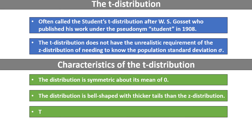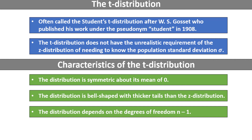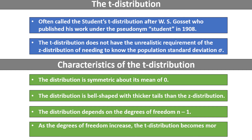The distribution depends on what are called the degrees of freedom, which are equal to the sample size n-1 for confidence intervals relating to the mean. As the degrees of freedom increase, the t-distribution becomes more like the standard normal z-distribution.